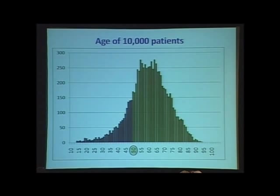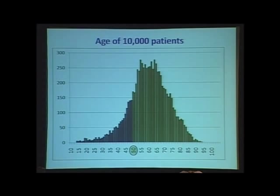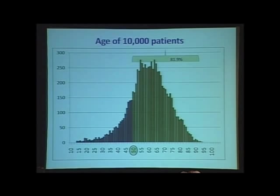Let's look at our graph of the age of 10,000 patients. You'll see here is the age at 50. If you were to practice using the criteria they give you — those less than 50 can go ahead and have their parathyroid tumor removed — that would leave out 82% of patients, all with established primary hyperparathyroidism.